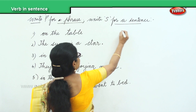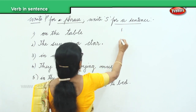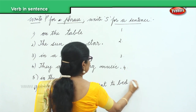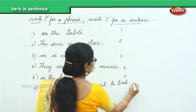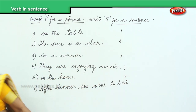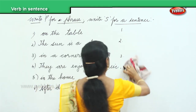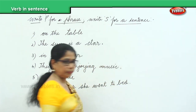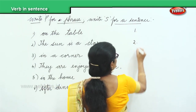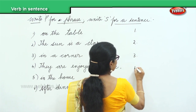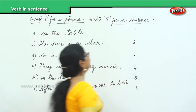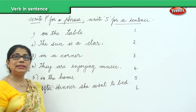The first, second, third, fourth, fifth, and finally you have the sixth one. Now identify all of them — let us see how good you are. One, two, three, four, five, and six. The first one you have is: on the table.